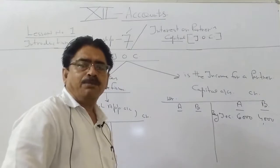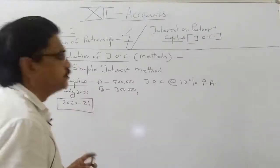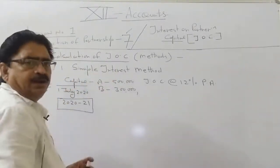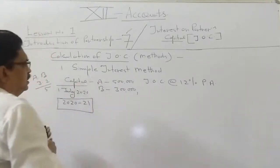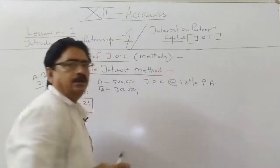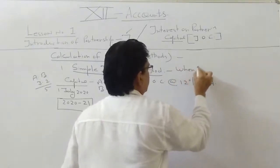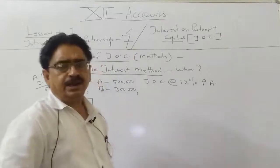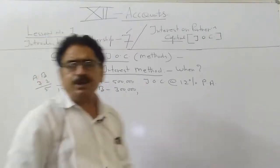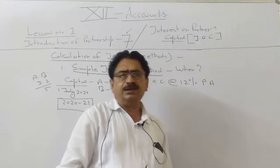Students, there are two methods for the calculation of interest on capital — interest on partners' capital. The first method is known as the Simple Interest Method (sadharan vidhi). This method is adopted whenever no additional capital is introduced by the partners during the year and no capital is withdrawn by the partners.